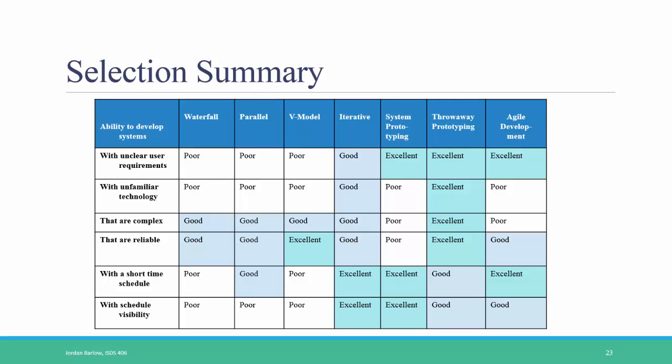Complex projects are very well suited to throwaway prototyping and also to the traditional waterfall method because you can have that time to do thorough planning and analysis before you jump in and do any design and coding. If reliability is your main goal — such as for health systems or military systems — then a methodology like the V-model or throwaway prototyping are the best because there is a focus on user feedback and on testing throughout the entire process. If you have a short time schedule, agile development and iterative and system prototyping are good because users can start using the new system right away even if it will be refined later. Finally, if you want to have a good grasp on how long the project is going to take, it's easy to tell in the iterative and system prototyping methodologies.